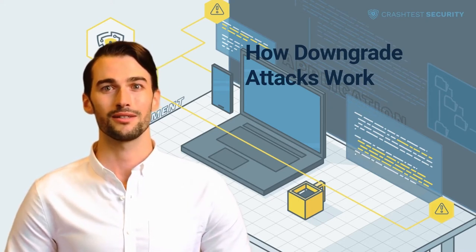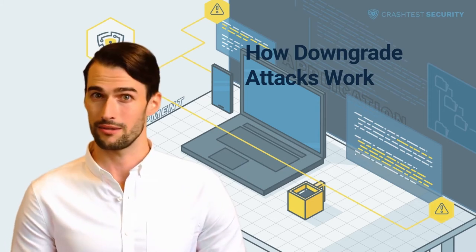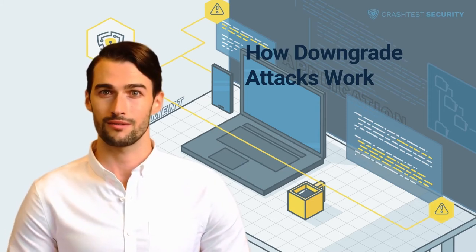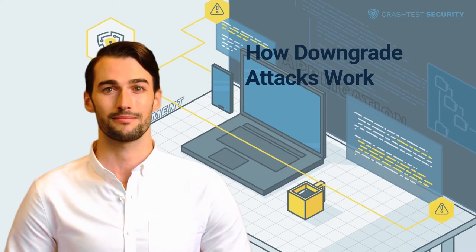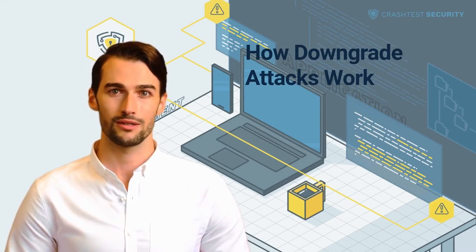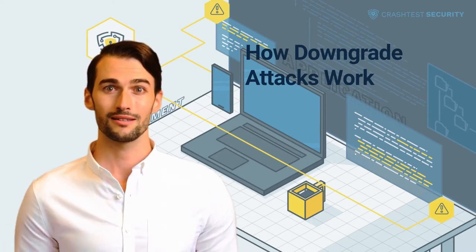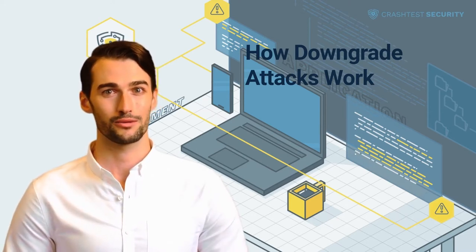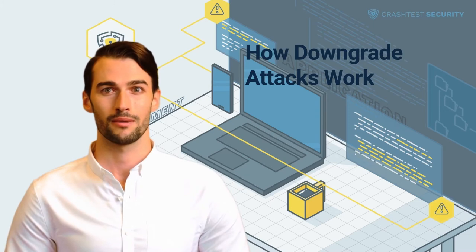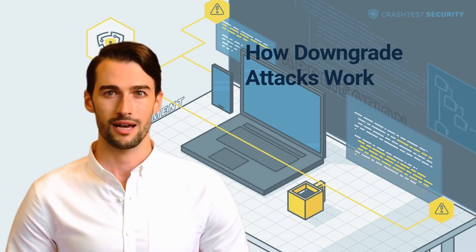Depending on the specifics of the attack, MITM may be used to passively capture traffic between a client and server once the downgrade is achieved. At the same time, it can also be used to actively interfere with traffic and send various requests to the server to decipher the cryptographic key, the session cookie, or something else. This is only one possible scenario of exploiting the vulnerabilities that a downgraded protocol version reveals.